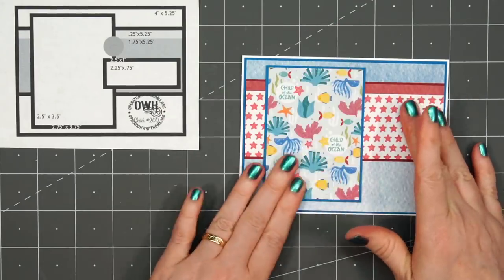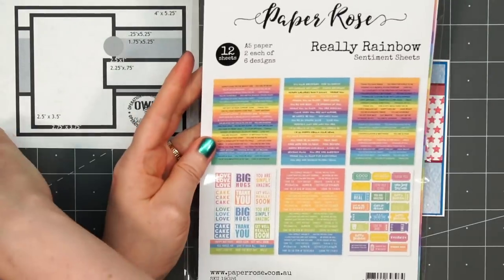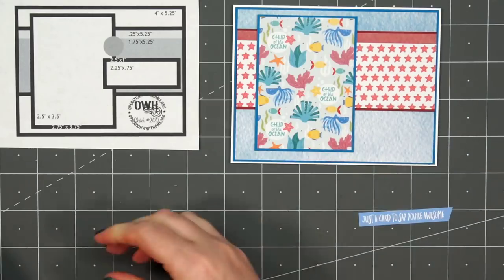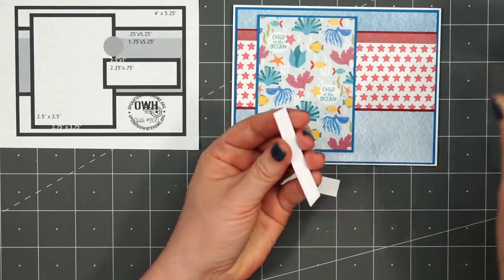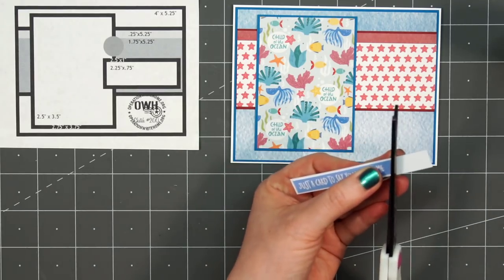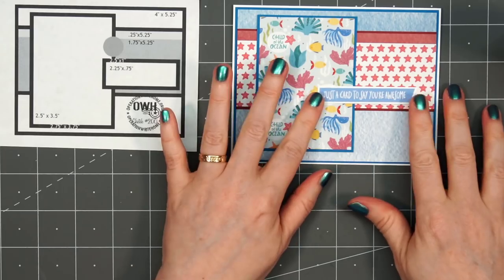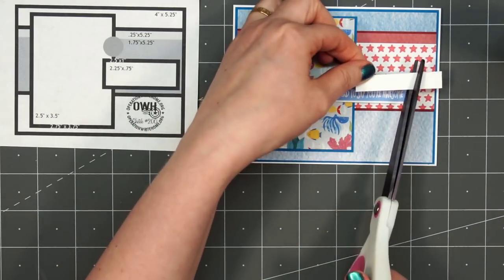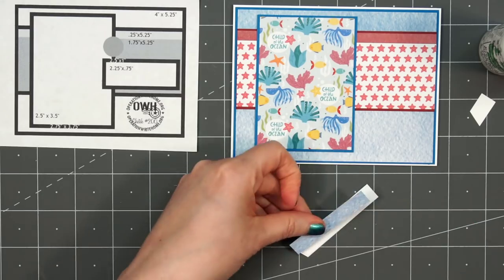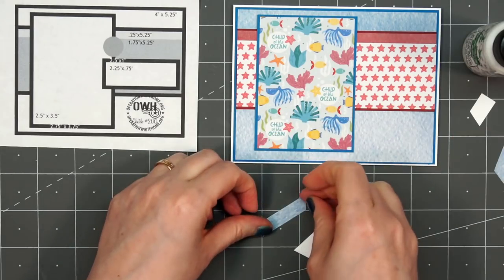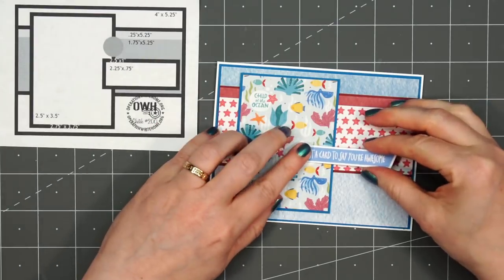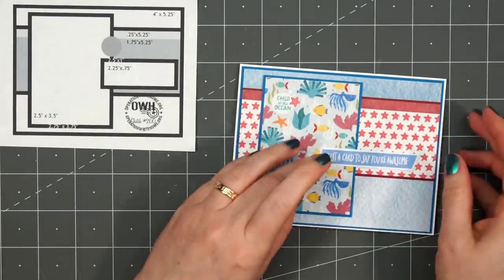For the sentiment on the card, I'll be using one of the sentiment sheets by Paper Rose. This is the Really Rainbow Collection. The blue matches perfectly with this card. The sentiment I selected is just a card to say you're awesome. I did cut the right side at an angle just for some extra interest and since I didn't want that sentiment getting lost with all those busy papers, I did layer it on some white shimmer cardstock. Before adhering it to the card, I'll add those scrap pieces of cardstock to the right side where it goes off of that underwater fish pattern paper. I'm using cardstock and also a scrap of the pattern paper. That way it's at the exact same level. I decided to cover up one of the Child of the Ocean sentiments.